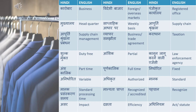Saptahik adhar par means weekly basis. Aapurti shrinkhla means supply chain. Aapurti shrinkhla prabandhan means supply chain management. Vyapar samjhauta means business or trade agreement. Vyapar is business or trade. Karadhan means taxation. Shulk mukt means duty free — like I said before, shulk mukt is duty free.